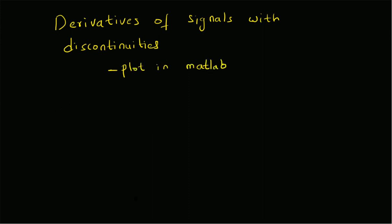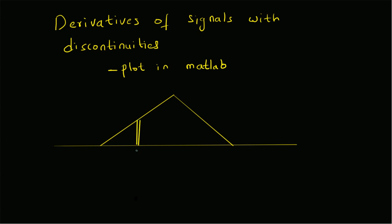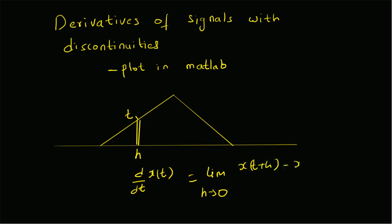Recall that for a continuous signal, for example a triangle signal, the derivative is well defined. If you want to find the derivative of a part of the triangle signal, we can directly apply the definition of the derivative. Assuming the separation is h and the point is t, the derivative is defined as the limit as h tends to zero of x(t+h) minus x(t) divided by h.